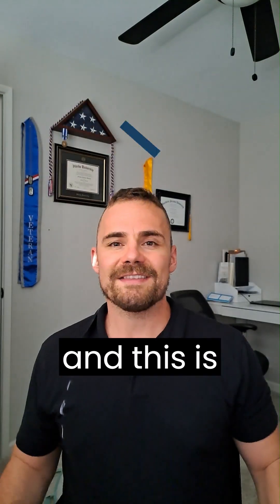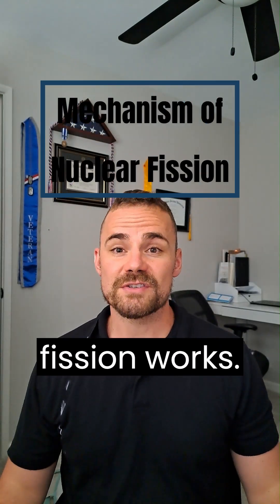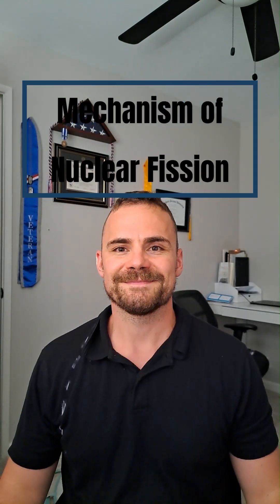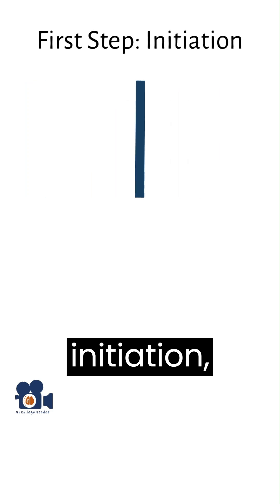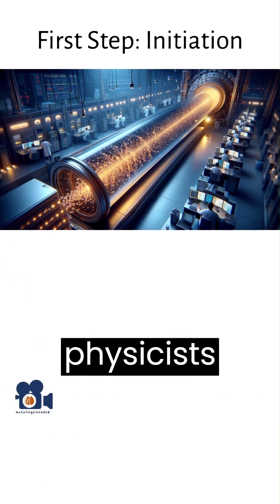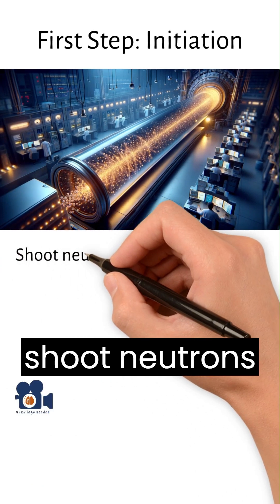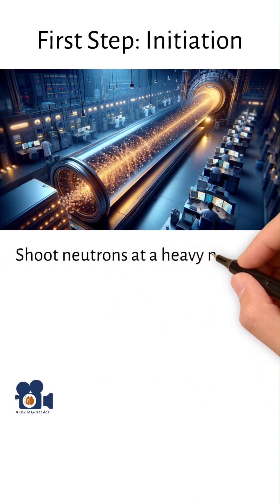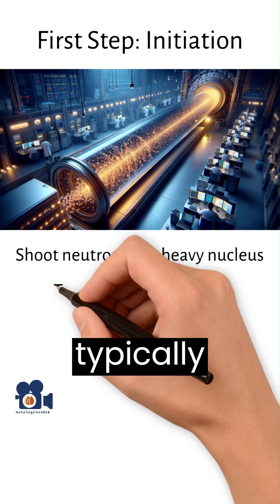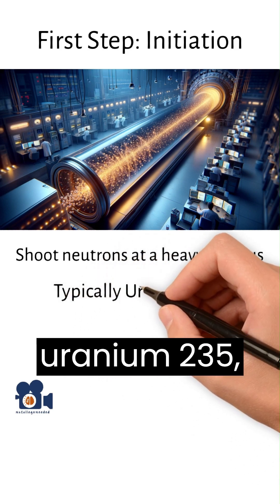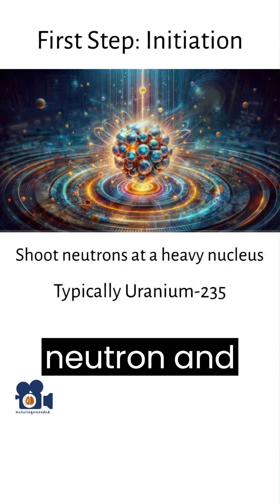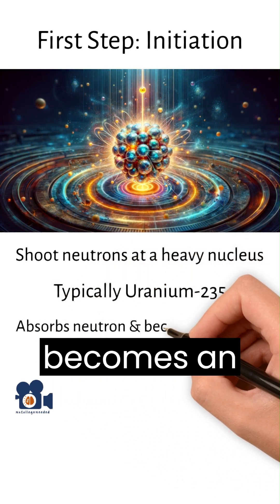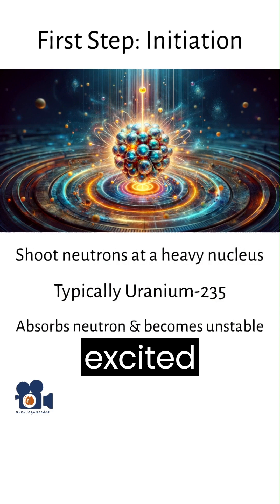This is my PhD in chemistry, and this is how nuclear fission works. The first step in nuclear fission is called initiation, where physicists shoot neutrons at a heavy nucleus, typically uranium-235, which then absorbs a neutron and becomes an unstable excited nucleus.